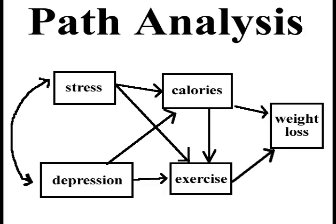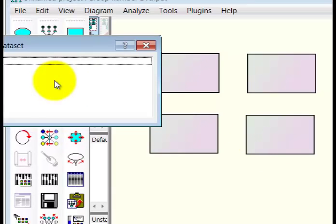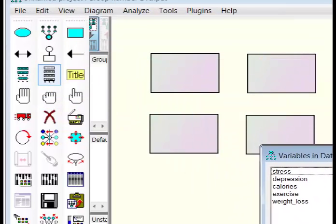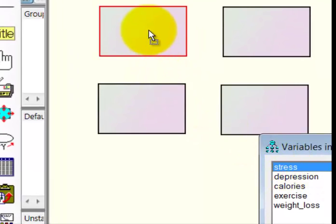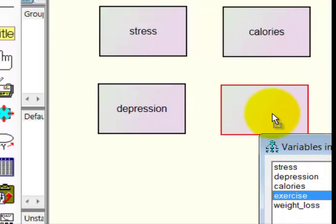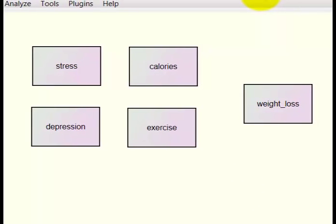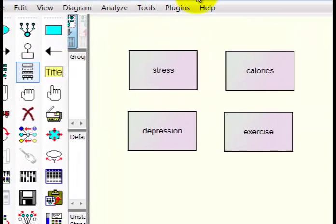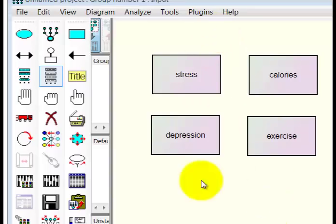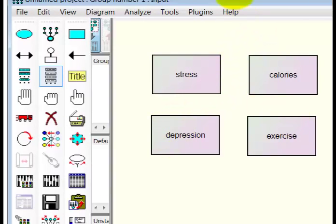Before we add arrows, we have to name the variables. Go here and it should pop up a list of all the variables. So this was stress, this was depressed, this was calories, this was exercise, and the last one was weight loss. Always double-check that the variables match the causal model — if you get them in the wrong order, you'll get a different result.